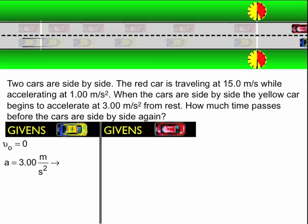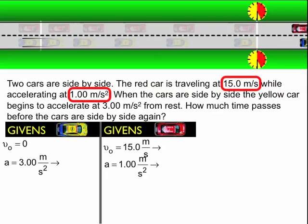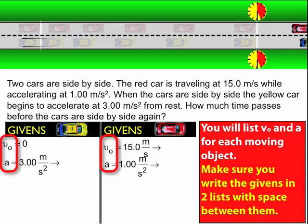For the red car, I know that it's going to be traveling at 15 meters per second at the beginning of the motion, and it's going to accelerate at 1 meter per second squared. This is how you're going to start the problems when you talk about a drag race kind of problem. Find the initial velocity and acceleration for each of the objects. Two lists of givens for two accelerations.